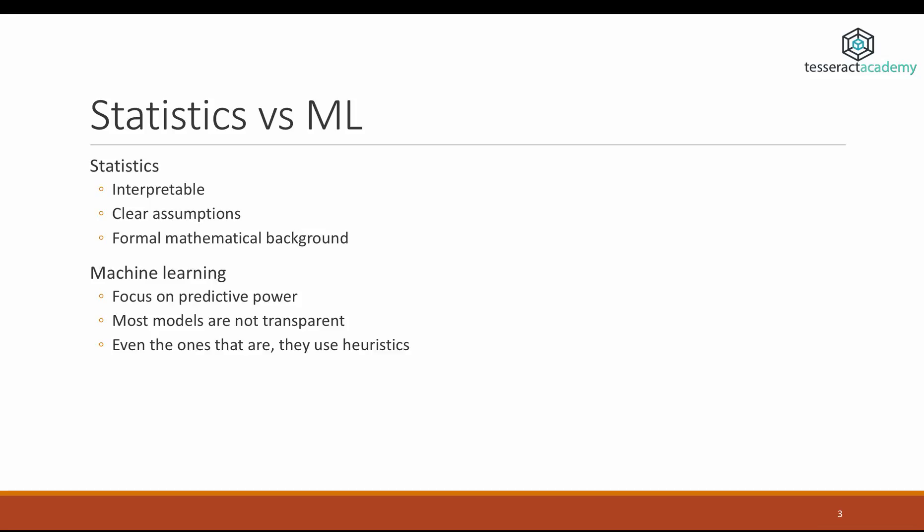However, before you venture into using any of the techniques we're going to talk about, it's important to think for a second whether you really need machine learning. The discipline that traditionally has been dealing with transparency in data is statistics. Statistics deals with issues such as significance tests, understanding differences between groups, understanding whether a variable influences another variable, whether this effect is significant or not, what's the direction of the effect. All the statistical models are based on a very formal and robust mathematical background. They have robust assumptions behind them and they're very transparent, very clear.